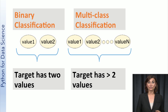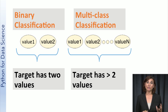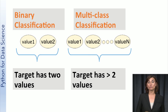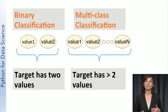A classification problem can be binary or multi-class. With binary classification, the target variable has two possible values. With multi-class classification, the target variable has more than two possible values — for example, the target can be short, medium, and tall. Multi-class classification is also referred to as multinomial or multi-label classification. Remember, the target is always a categorical variable in classification.